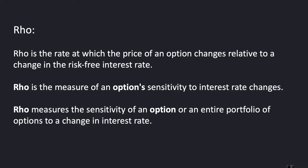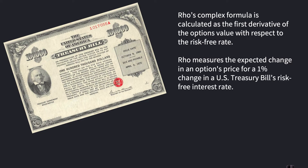Rho measures the sensitivity of an option or an entire portfolio of options to a change in interest rates. You can actually use Rho not just to measure individual options, but the actual portfolio of options as well if you've got a lot of options in your trading account. Rho has a relatively complex formula and it's calculated as the first derivative of the option's value with respect to the risk-free rate.